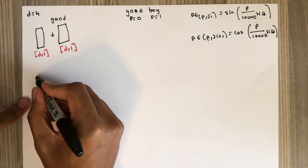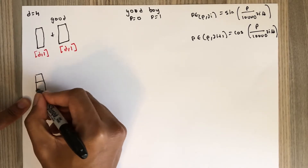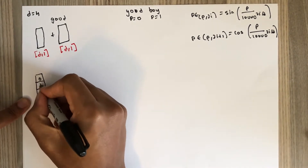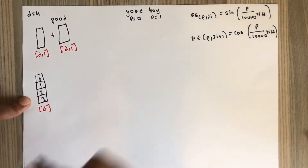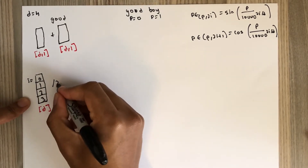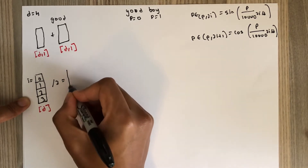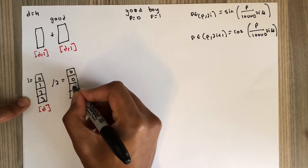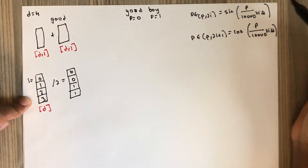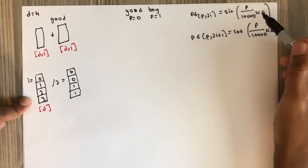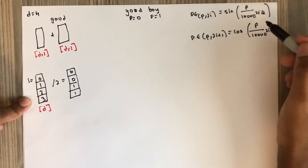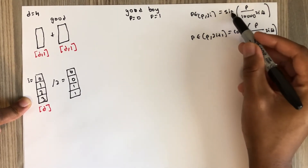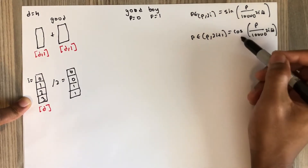Think of i as a kind of list, and the length of this list is d. So i runs from 0, 1, 2, 3 — the length of i is d. What we need to do is divide this list by two, and it becomes: 0, 0, 1, 1. If i is zero, floor(i/2) is zero; for i = 1, floor(i/2) is also zero; for i = 2, it becomes 1. For the first part we use sine and for the second part we use cosine.